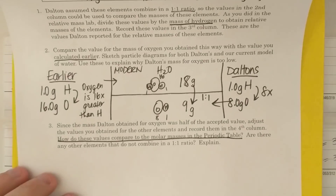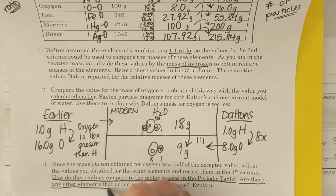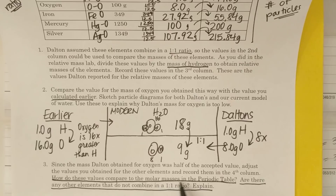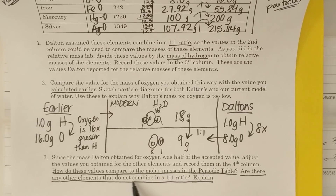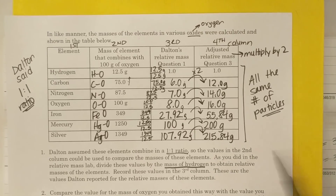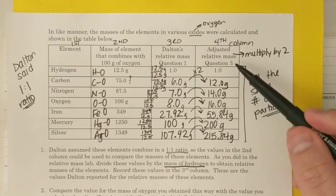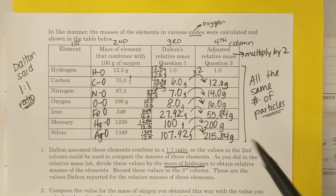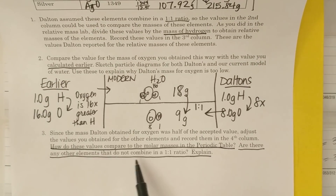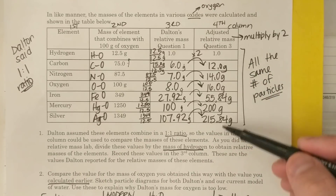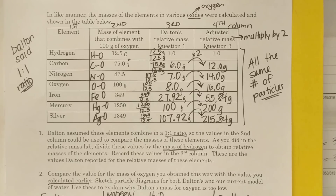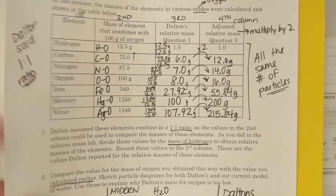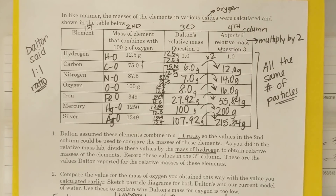On your own, answer and complete question three: how do these values compare to the molar masses on the periodic table? Are there any other elements that do not combine in a one-to-one ratio? Explain. Look at these new adjusted masses — do they match the periodic table values? Remember, we're making the assumption that all these combine in a one-to-one ratio. Make sure worksheet number five is completed, with question three answered, and have it stapled or taped into your notebook to be checked.